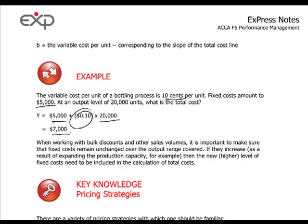When analyzing the total cost function, take into consideration that discounts and other sales volumes might change the amount of fixed costs. If fixed costs change, the new amount must be included in the analysis. For example, if bulk discounts are received, the price and variable cost may be lower, allowing increased production — but at that increased level of production, fixed costs might also increase. We will continue in the next video on pricing strategies.